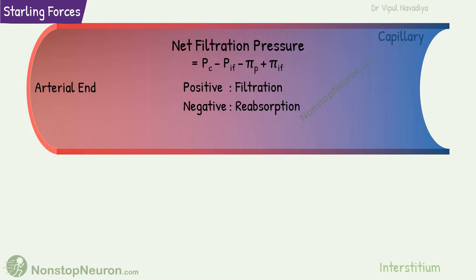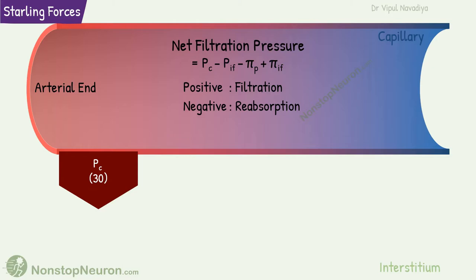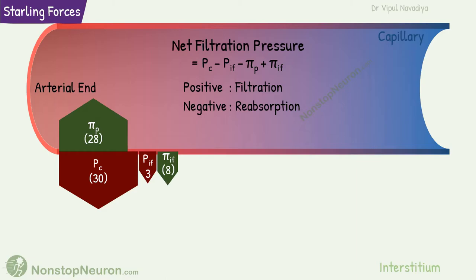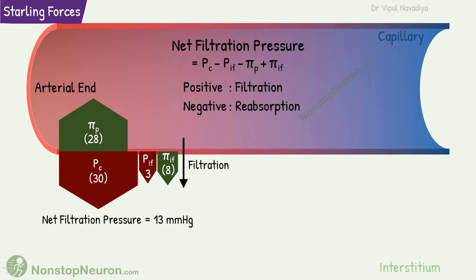At the arteriolar end, capillary hydrostatic pressure is 30 mmHg, interstitial hydrostatic pressure is –3 mmHg, plasma colloid osmotic pressure is 28 mmHg, and interstitial colloid osmotic pressure is 8 mmHg. So, net filtration pressure is 13 mmHg. Being positive, it favors filtration of fluid.